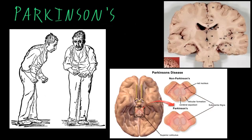If you ask them to relax and you try to move their muscles around, their muscles are stiffer than normal. They feel slow and stiff, and they often have the tremor as well. Late in the course of the disease, when motor abnormalities are severe, patients may become unable to care for themselves, and may also develop abnormalities of cognitive, emotional, or autonomic functions.